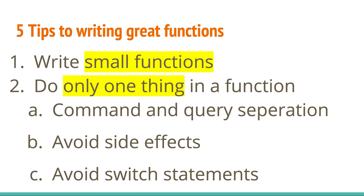Action-oriented functions include making an API call — these are command-oriented functions. The second type are query-oriented functions, wherein you ask the function: can the user log in? Are the credentials correct? If you separate these two types into their own functions, then each function does one thing. Typically, if you combine command functions with query functions, you tend to do more than one thing in a function, so keep them separate.